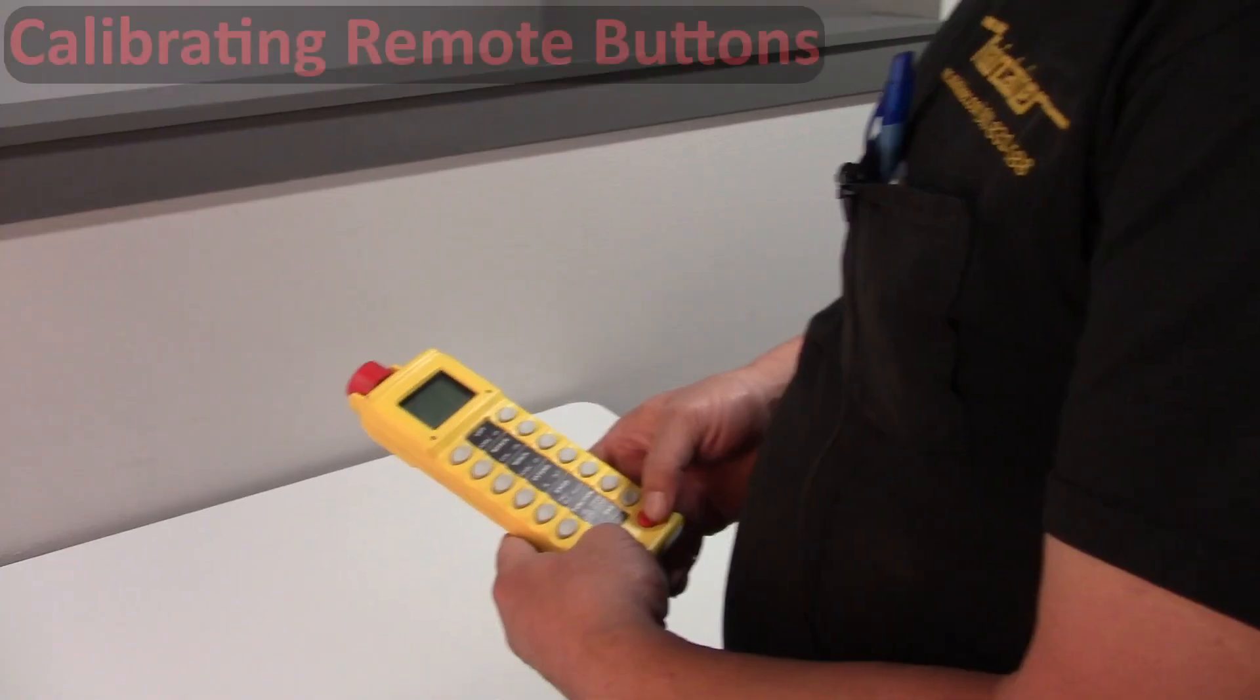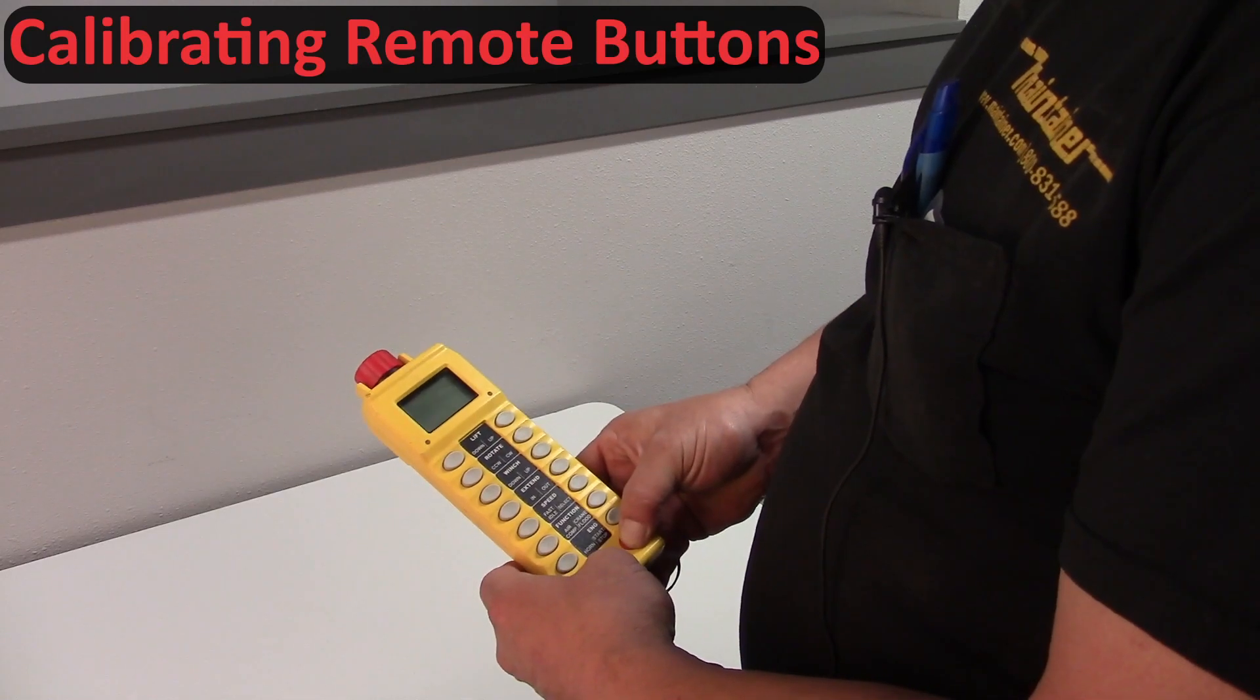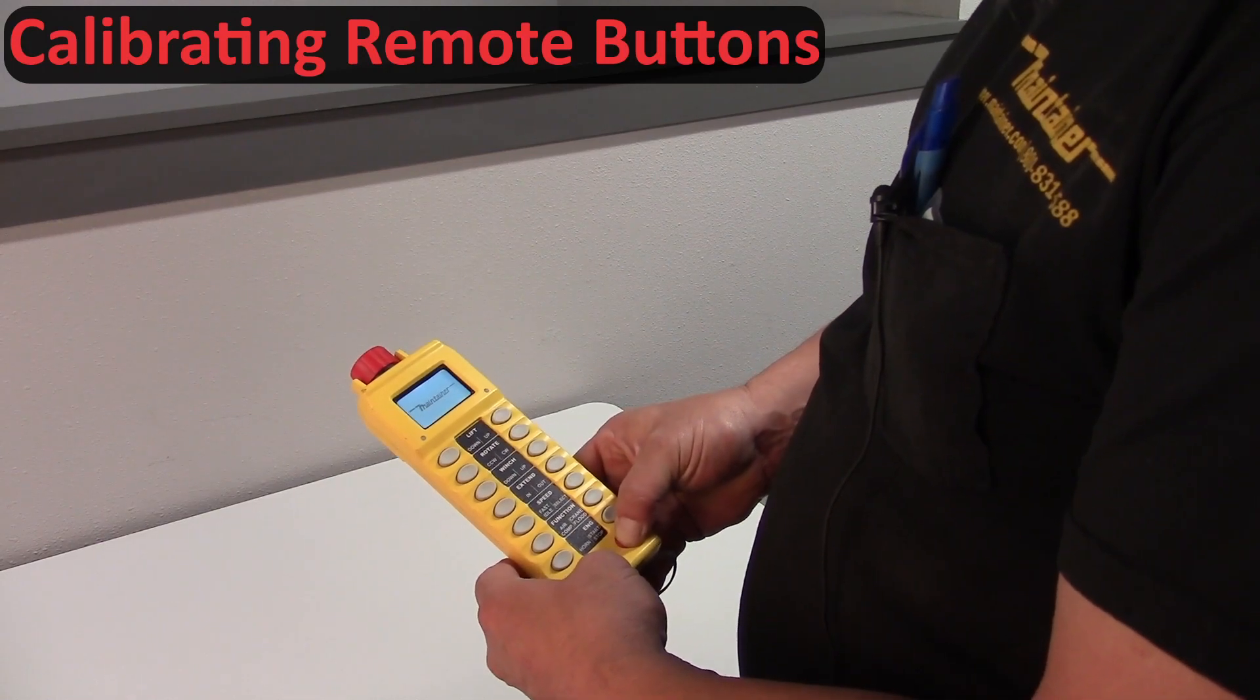Hello this is Kelly Bellman at Maintainer and we're gonna calibrate the buttons on your Maintainer push button remote. To calibrate the buttons, push the red and the green at the same time until the word Maintainer appears on the screen and release the buttons.